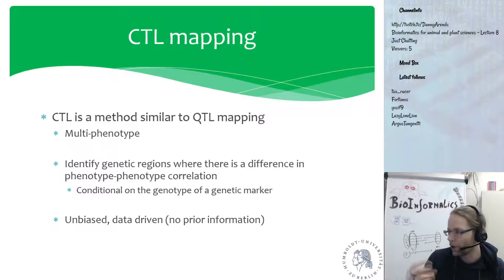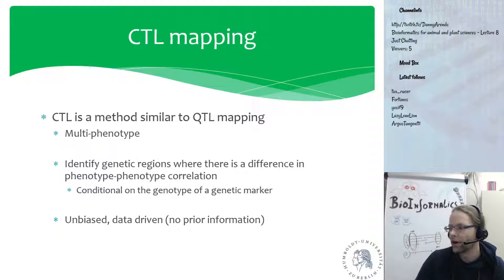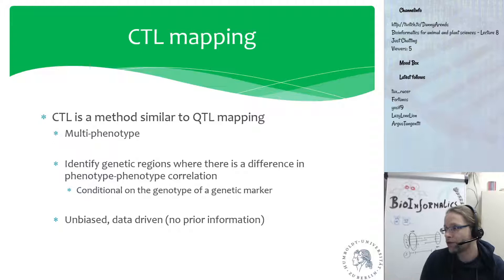One of the advantages of CTL mapping, similar to QTL mapping, is that it's unbiased and data-driven — you don't need any prior information. Of course, you need to have measured two or more phenotypes, but normally when you do an experiment you're already measuring multiple phenotypes. If I'm a plant researcher, I'm measuring the yield, the number of leaves, the height, and susceptibility. If I'm a fish researcher, I'm also measuring more than a single phenotype.